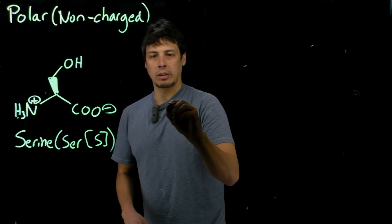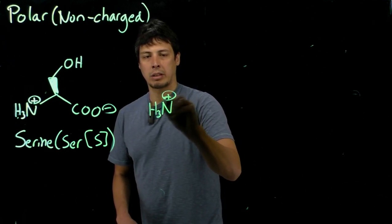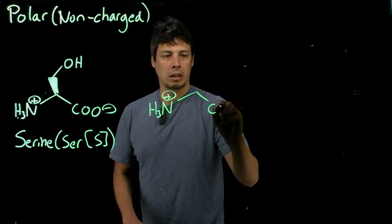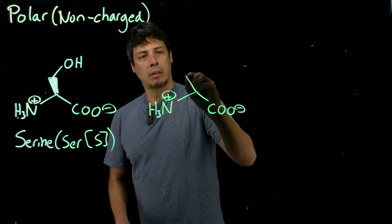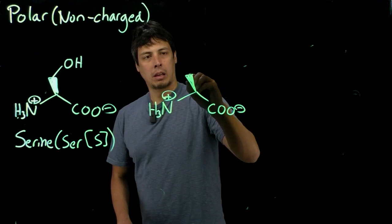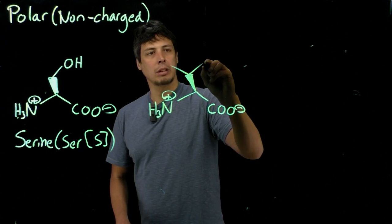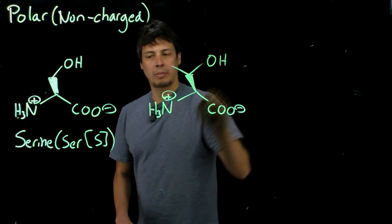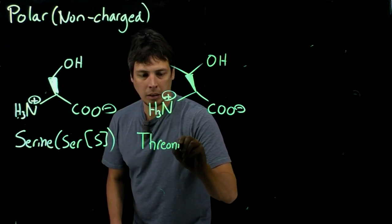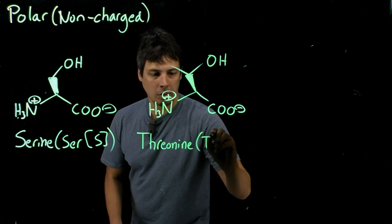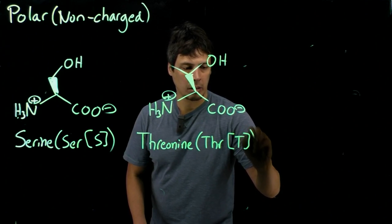The next one is very similar in structure, but it has a branched side chain, our standard stuff here. Alright, so we have a carbon going in one direction, and in the other direction we have an OH group. This is called threonine. This has a three letter code of THR and a one letter code of T.